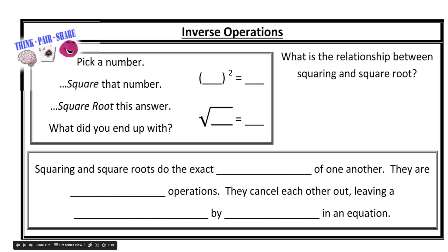Inverse operations, or opposite operations, act opposite of one another. Multiplication and division are inverse operations. Addition and subtraction are inverse operations. Let's examine another relationship: square and square root.